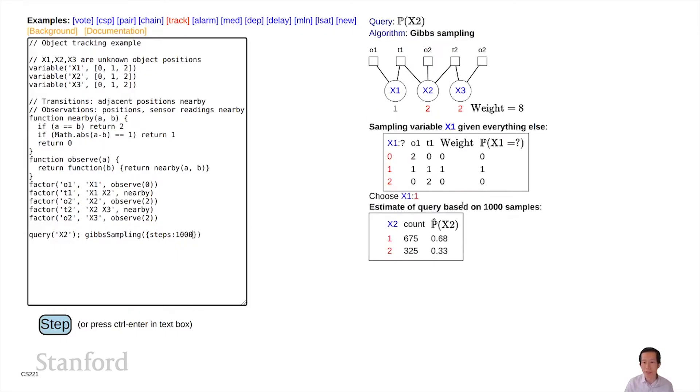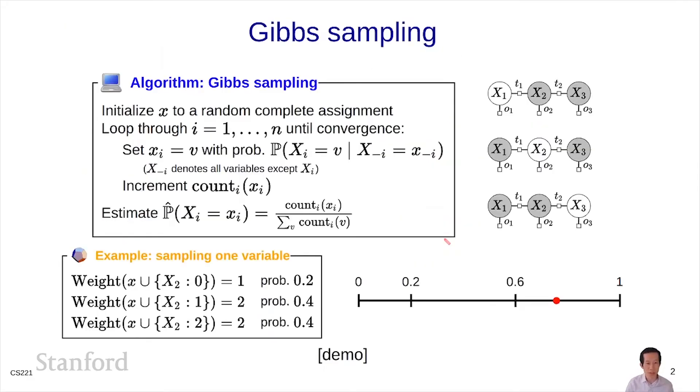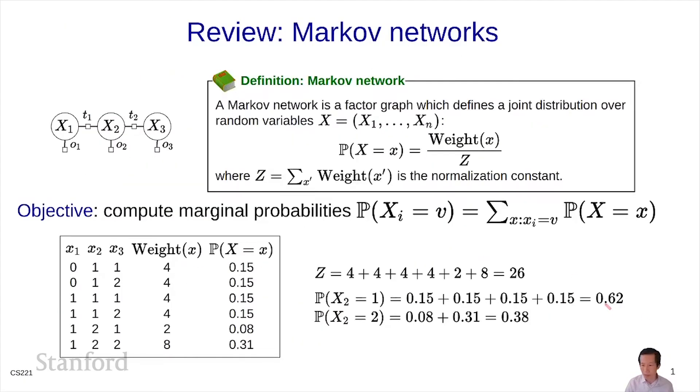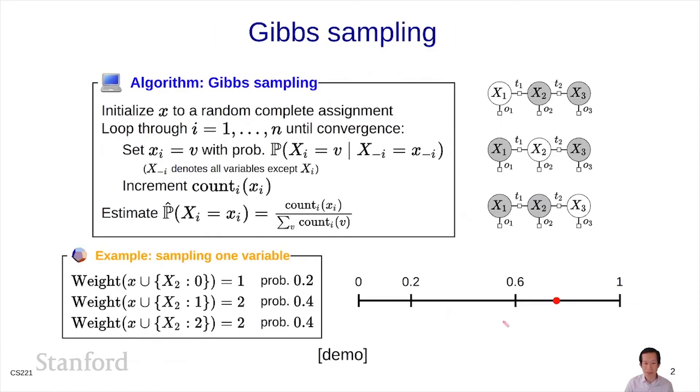Now I have a lot of counts of x2 equals one, some counts of x2 equals two. You can see the probabilities are converging to something like 0.6 and 0.3. Let me just hit a step a few more times. You can see that these probabilities are indeed converging to 0.61, which if you remember from here, is pretty close to the true marginal probability.